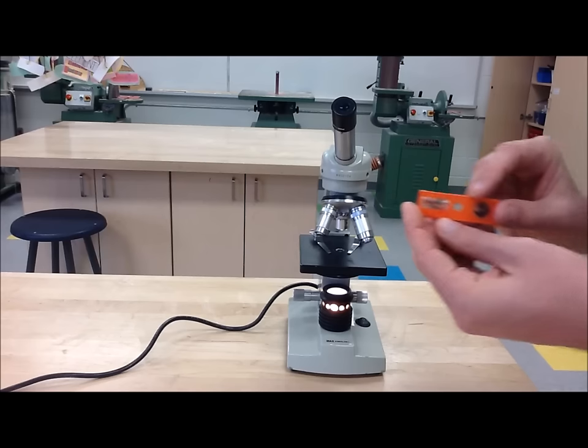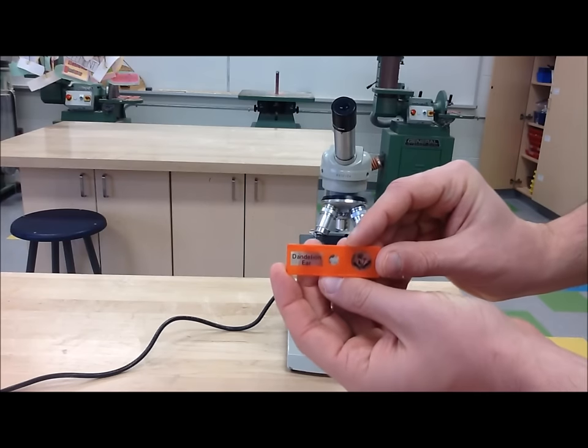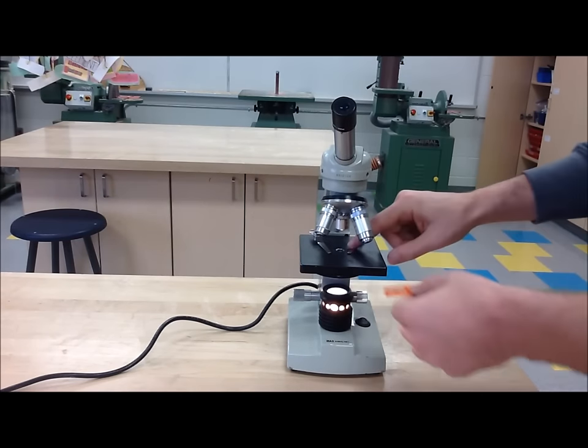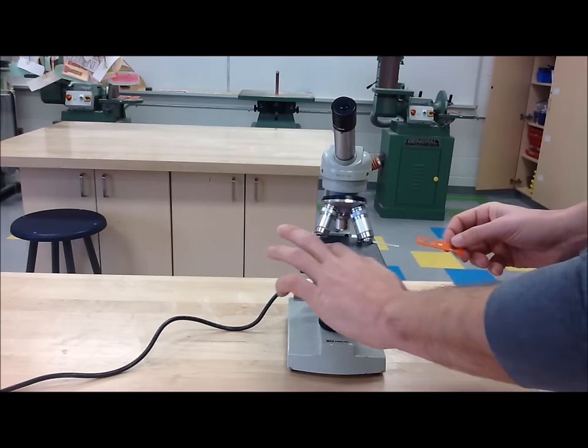Step 7: Place a properly prepared slide on the stage with the specimen directly on the light. Fasten the slide using the stage clips.